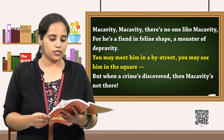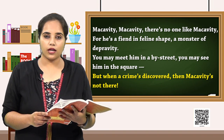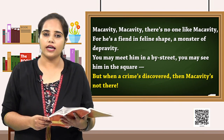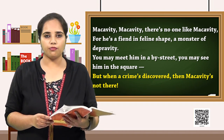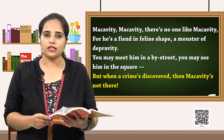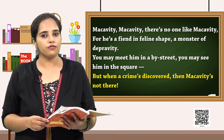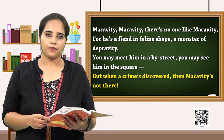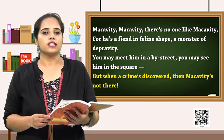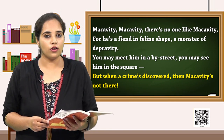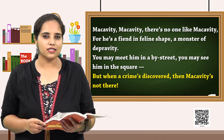Let's look at the last line of the stanza: 'But when a crime is discovered, then Macavity is not there.' Again, Macavity is so witty and so villainous that in spite of doing so many things, Macavity has his own ways to escape. Since he is just among us and still we are not able to figure out who he is, Macavity is brilliantly playing his game. So please be careful about Macavities around you.